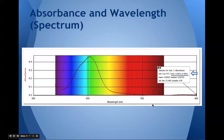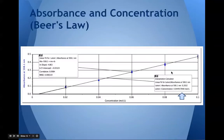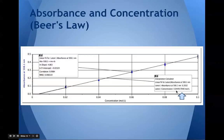Here is the absorbance-versus-wavelength graph — as you can see, the maximum absorbance was at 508.1 nanometers. Here's the data table showing the absorbances of various concentrations of cobalt chloride solutions we made. And finally, the graph of absorbance and concentration, which is where Beer's Law comes in. With this linear relationship, we determined the concentration of the unknown cobalt chloride solution to be around 0.04492 molar.